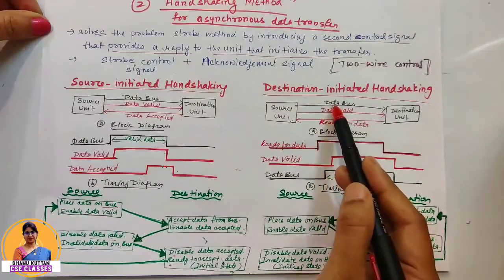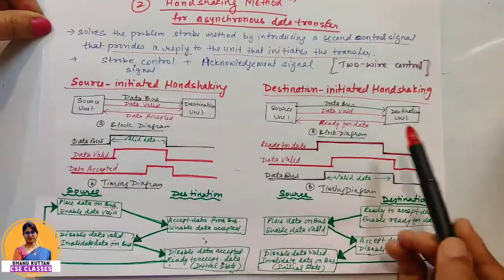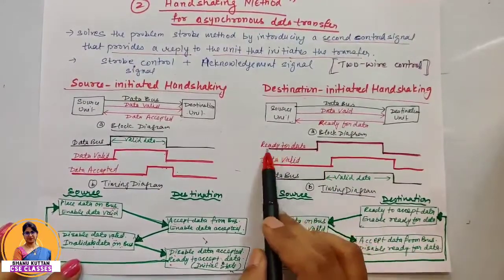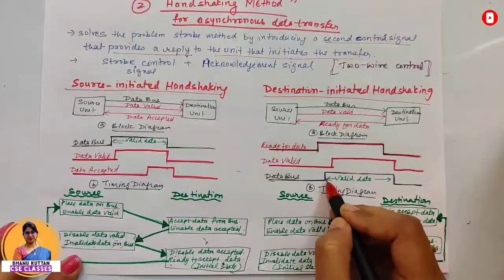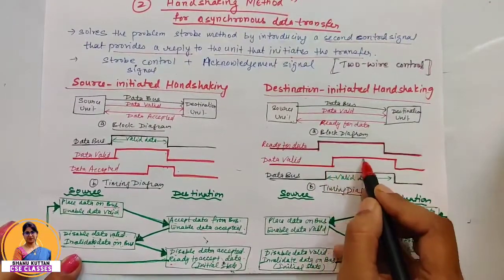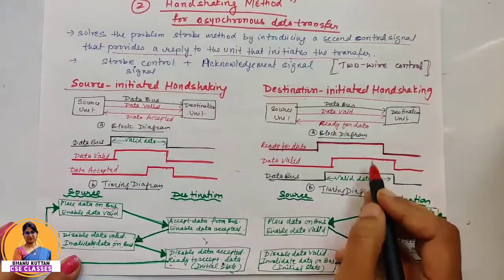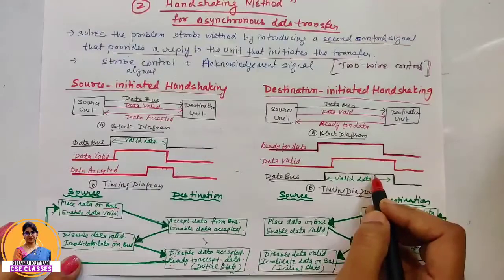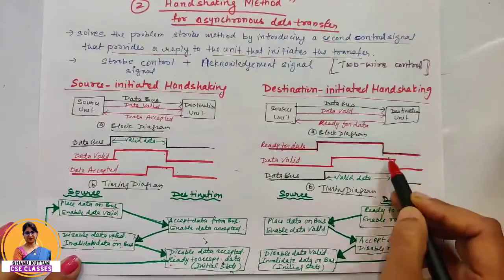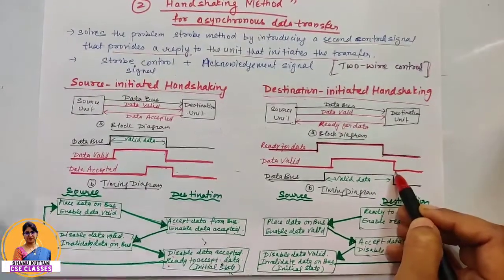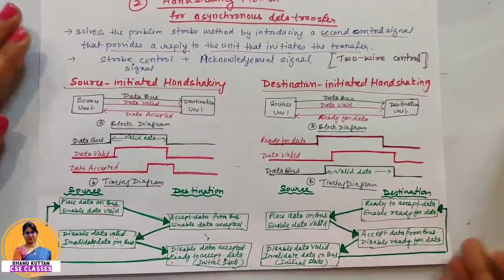Looking at the timing diagram for destination initiated handshaking: first, the ready for data signal is enabled. After it is enabled, data comes to the bus and the data valid signal is enabled. The data valid signal being enabled means the destination has received the data. After receiving it, the ready for data signal will be disabled. After ready for data is disabled, the data valid signal will also be disabled and the data will be invalidated, returning to the initial state.